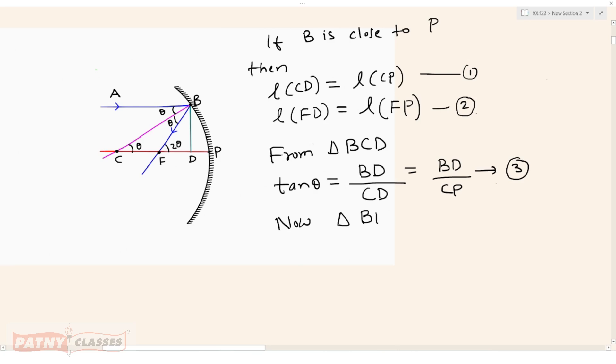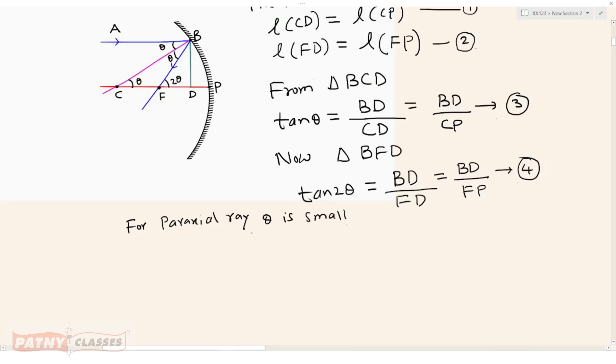From triangle BFD, tan 2 theta equals BD upon FD, but from equation 2, FD is nothing but FP, therefore BD upon FP, call it equation number 4. For paraxial rays, theta is small, which implies tan theta approximately equals theta and tan 2 theta approximately equals 2 theta. This implies 2 theta equals BD upon FP, call it equation number 5.